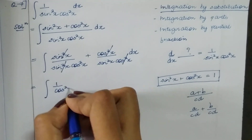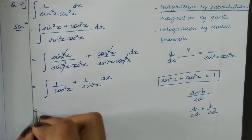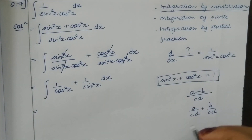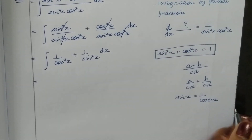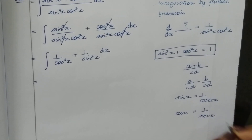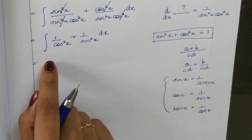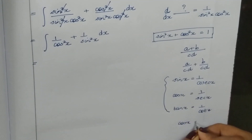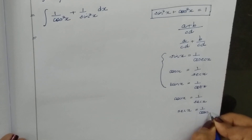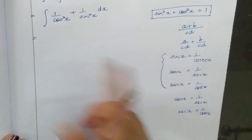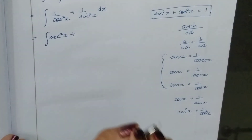This gives us the integral of 1 over cos square x plus 1 over sin square x, dx. Now using the formula: 1 over cos square x equals sec square x, and 1 over sin square x equals cosec square x.